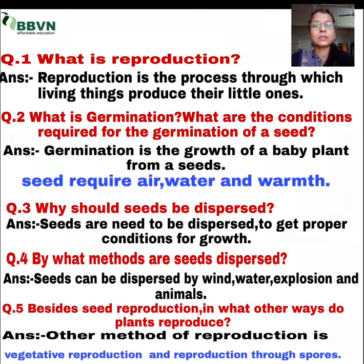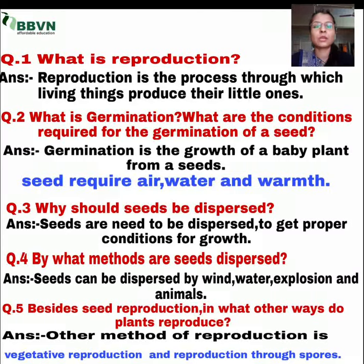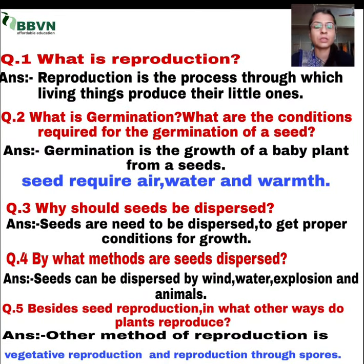And what are the conditions required for the germination of a seed? Seed ki germination ke liye kaun kaun si conditions require hoti hain? Aapne padha tha chapter mein ki jo ek seed hota hai, usse germination ke liye air, water, warmth chahiye hoti hai. Jo air hoti hai, kyunki jo trees hoti hain, inko bhi sans lena hoti hai, inko oxygen lene ke liye air ki zaroorat hoti hai.